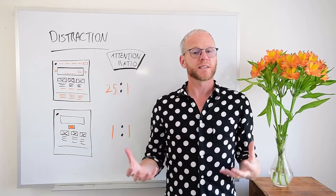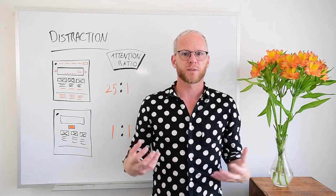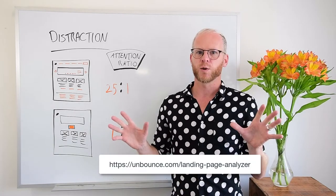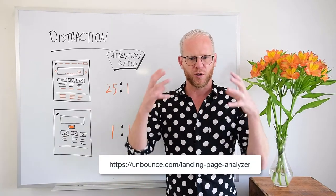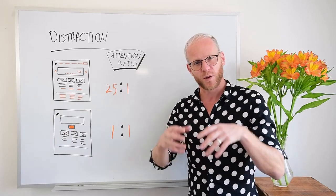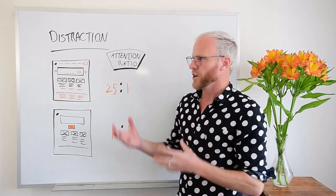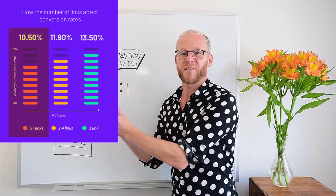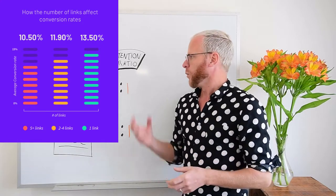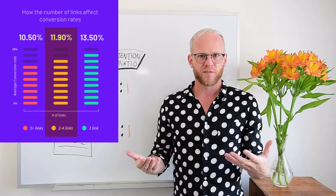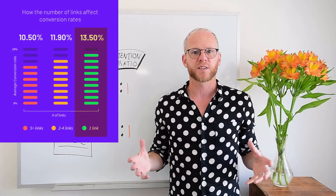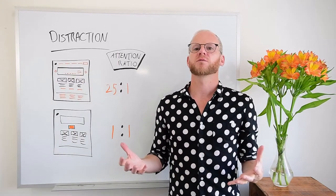Let's look at some data. We consistently see the impact of attention ratio at Unbounce through our data science team and, more recently, our free landing page analyzer tool. It allows you to put the URL of your landing page in and it will analyze it and give you a ton of actionable advice. From the first 20,000 pages that went through it, we gathered some important data. When the attention ratio was 5 to 1 or higher, the average conversion rate was 10.5%. When it was between 2 to 1 and 4 to 1, it was 11.9% on average. And when it was 1 to 1, the average conversion rate was 13.5%.